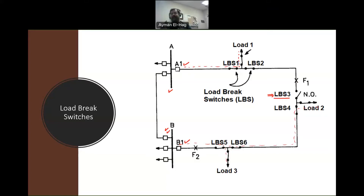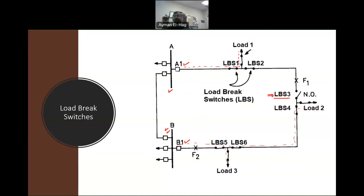Generally speaking, we design the distribution system as a ring system but operate it as a radial system. We design it as a ring from the beginning because if we close the normally open switch, we have the ability to feed loads from the other bus. This normally open switch is key to switching the system between ring design and radial operation.